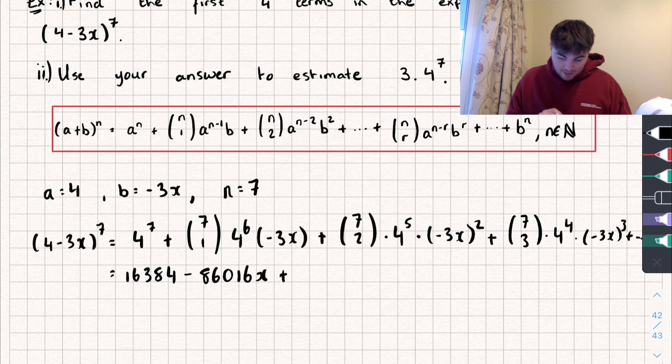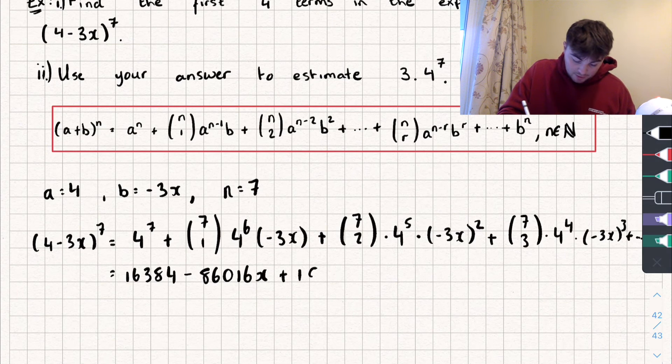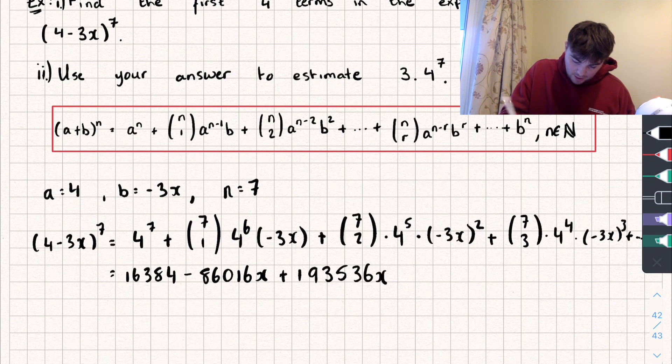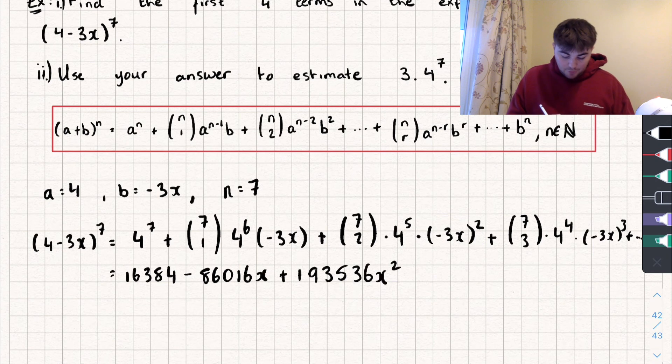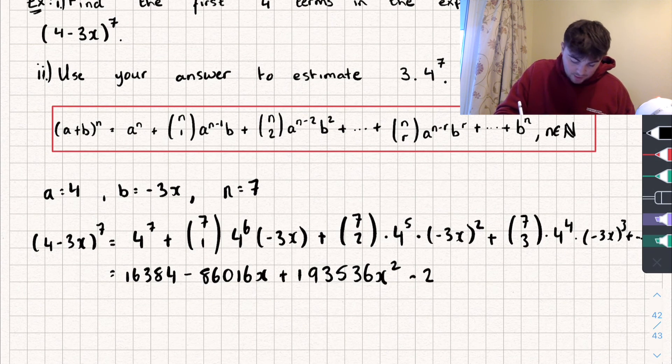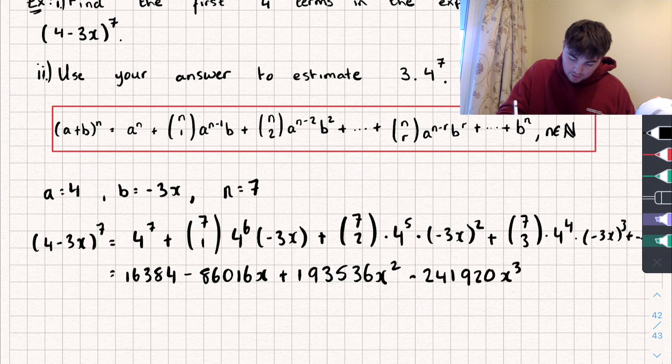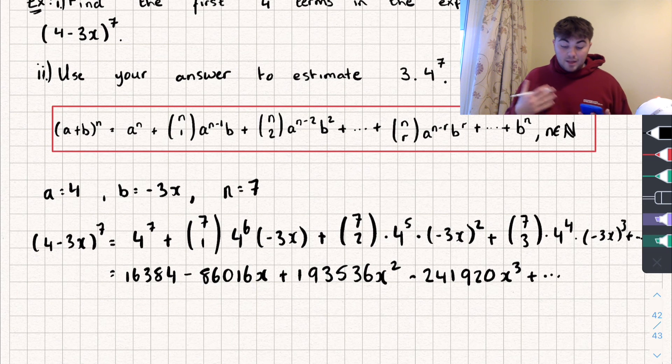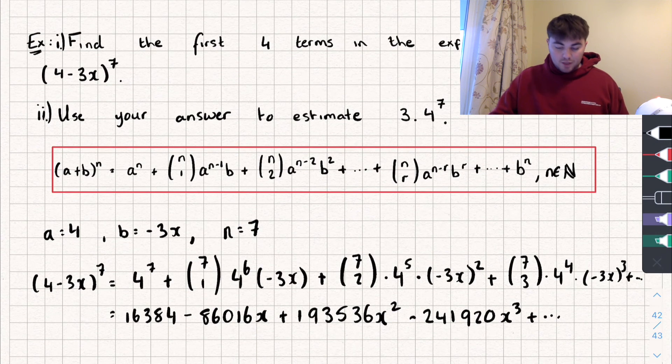Plus 7 choose 2, multiplied by 4 to the power of 5, multiplied by negative 3 squared. So that's going to give me plus 193,536x squared. And for the final term, we're going to do 7 choose 3, multiplied by 4 to the power of 4, multiplied by negative 3 cubed. And that gives me an answer of negative 241,920x cubed, plus whatever the other terms are. So that's the first part, that's pretty easy.